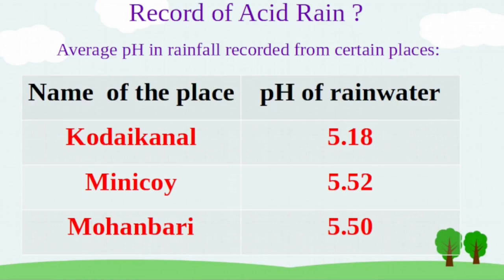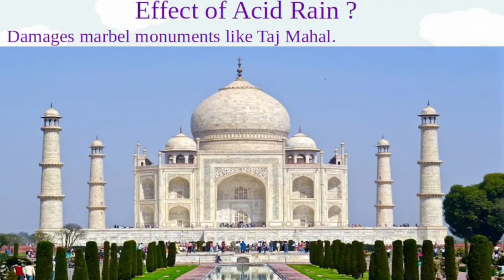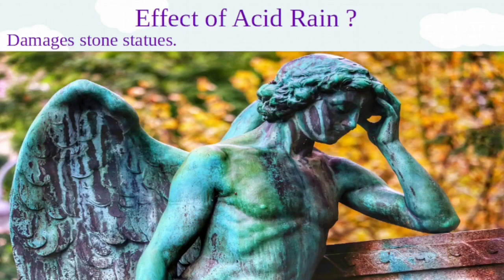Let us see how acid rain can affect the environment. First of all, acid rain causes deterioration of buildings specially made of marble, such as monuments like the Taj Mahal. Crystals of calcium and magnesium sulphate are formed as a result of corrosion caused by acid rain. It damages stone statues — priceless stone statues have been partially dissolved by acid rain — and it also damages metals and car finishes.